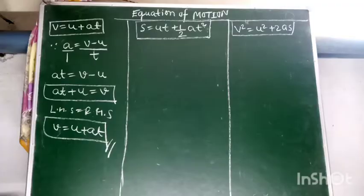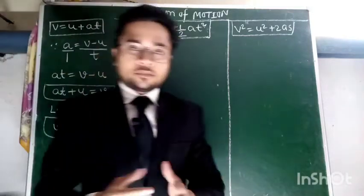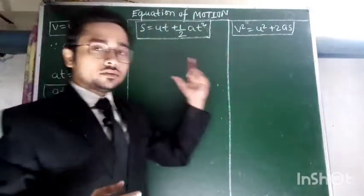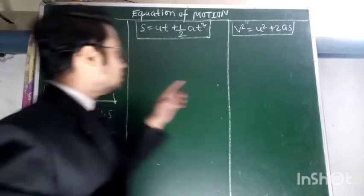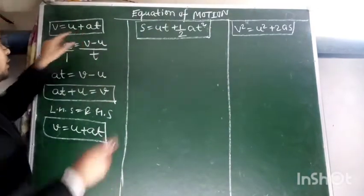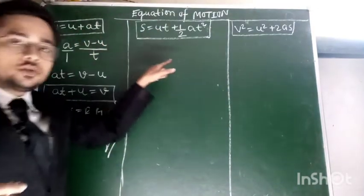Now we come to another point: the equations of motion. There are three equations of motion. First is V equals U plus AT. Second is S equals UT plus half AT square. And third is V square equals U square plus 2AS.